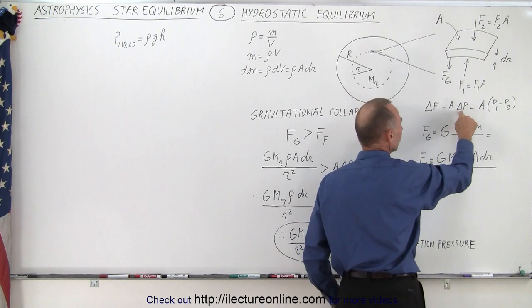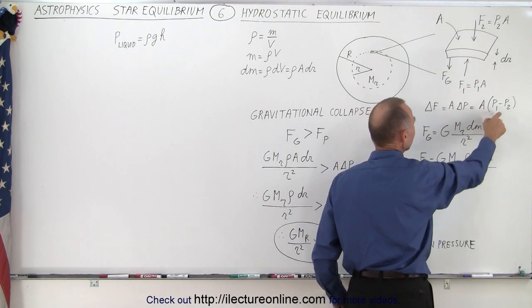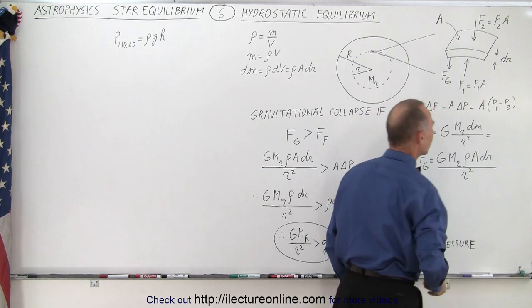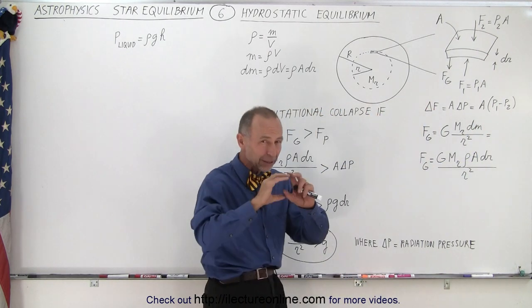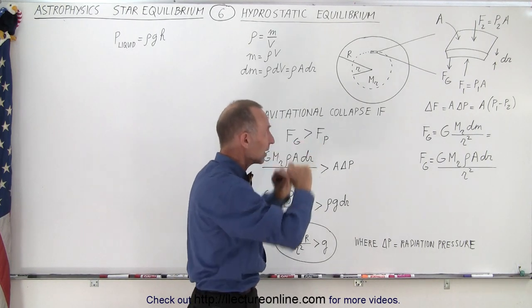And of course, there's going to be a small change in the pressure, delta P, between that top layer and bottom layer. And so we can say that it's A times P1 minus P2. And that's going to be the change, the force that's keeping that layer from sinking down.